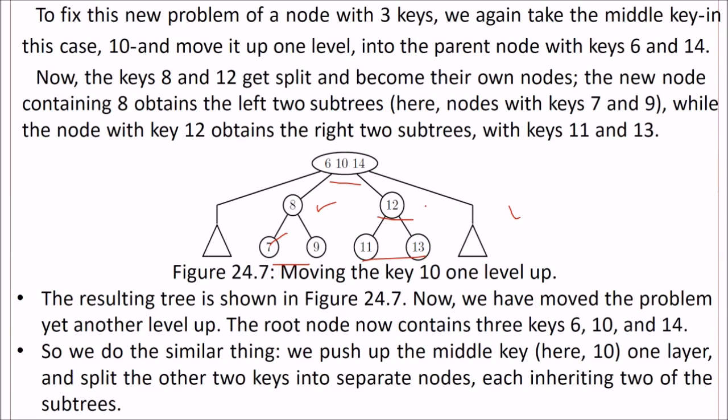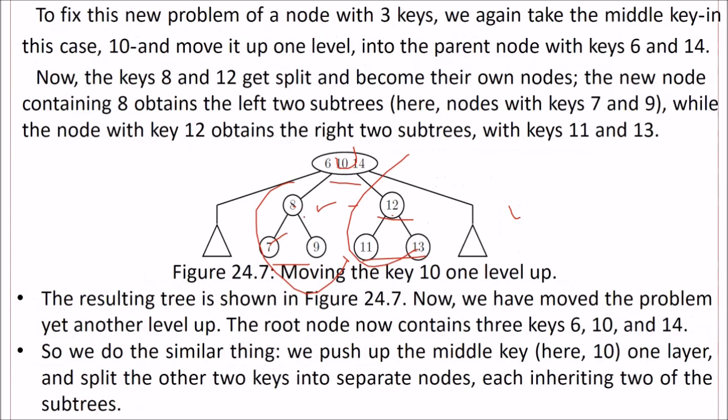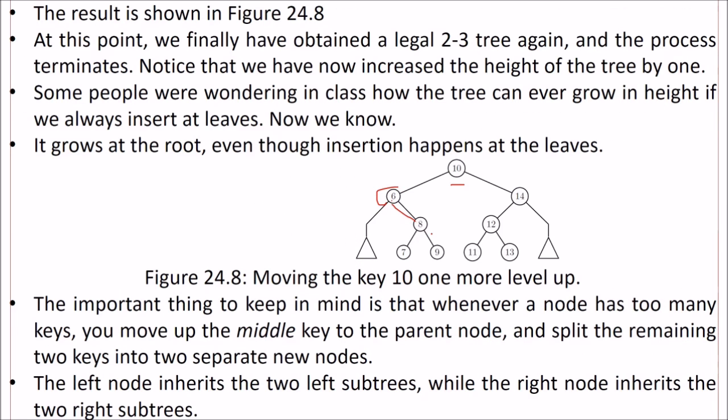We do the similar thing. We push this 10 one layer up and split the other keys into separate nodes, each inheriting two of the subtrees. Now 10 will go up, the left one will have 6, and 14 will be made another node. These trees will be connected with them. The right one will be 8 and its subtree, and 14 and 12 will be the left subtree. So we finally have obtained a 2-3 tree again, and the process terminates.